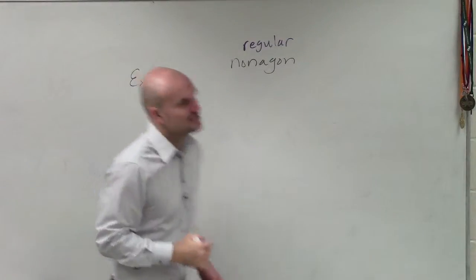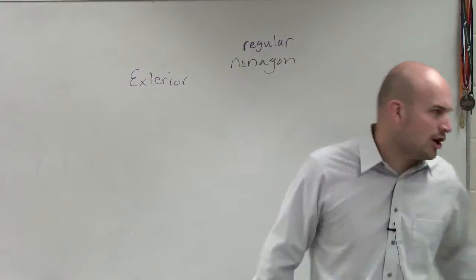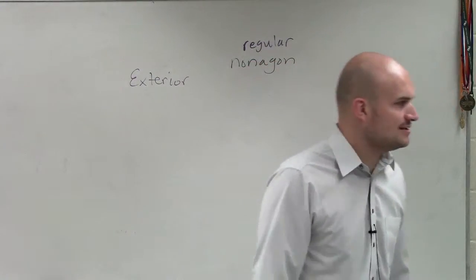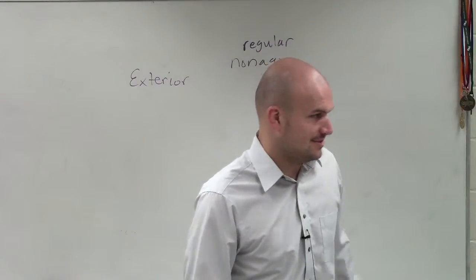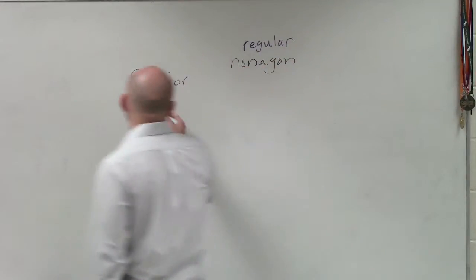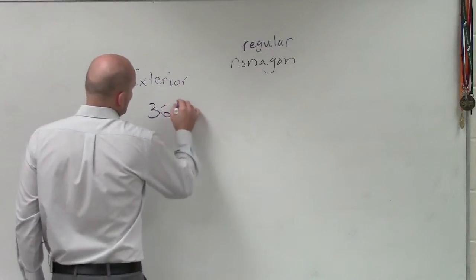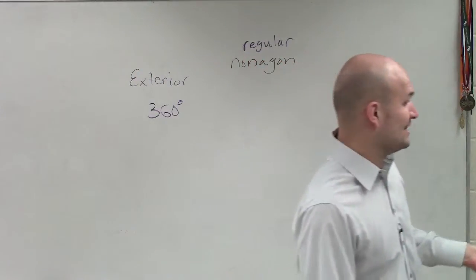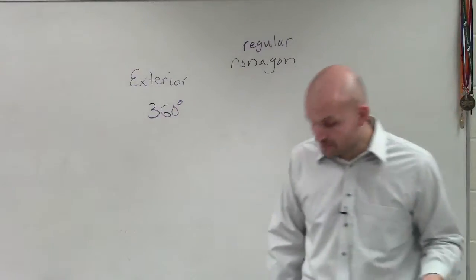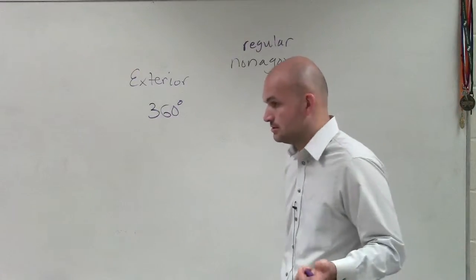The reason why I like exterior is because, Kevin, do you know what the sum of all exterior angles are for any polygon? Starts with a 3, ends with a 60. 360, right? So you're going to want to remember that, Kevin, for the rest of this class. The sum of all exterior angles for any polygon is going to be 360.